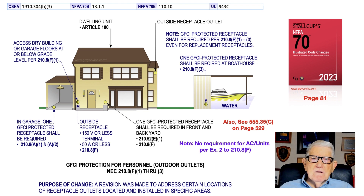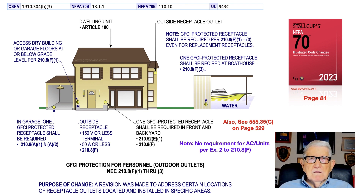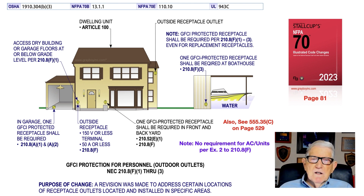The note above the boat dock area states that any outside receptacles that are replaced and not GFCI protected would need to be GFCI type receptacle outlets in accordance with 210.8 F1 through F3. Note that there is no ground fault protection required on a circuit supplying an AC air conditioner unit, as covered in exception 2 to 210.8 F.